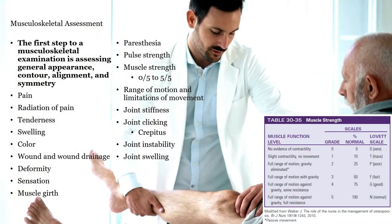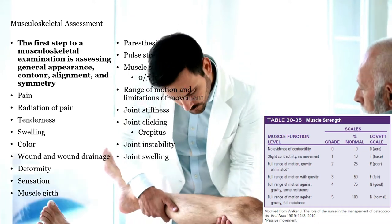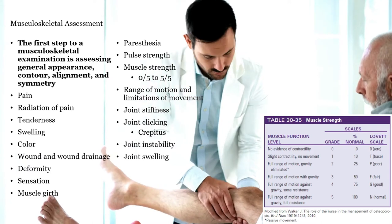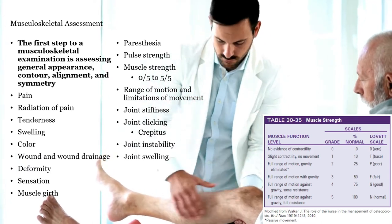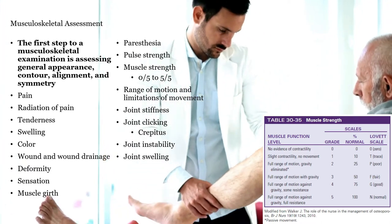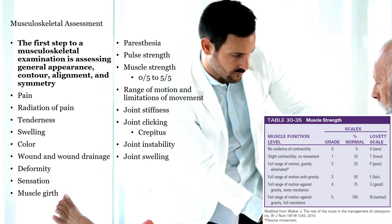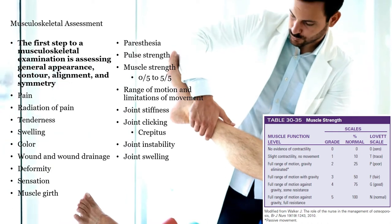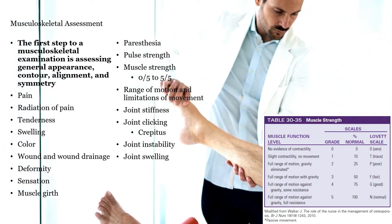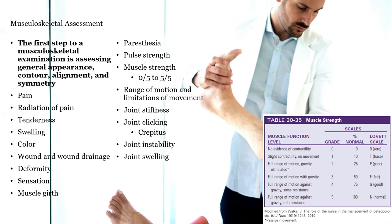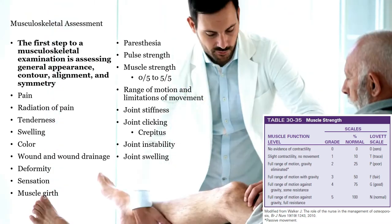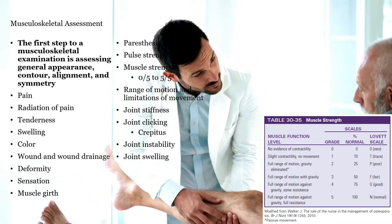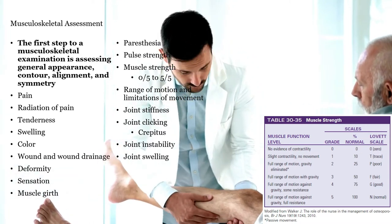A good musculoskeletal examination begins by assessing their general appearance, contour of the muscles, alignment of the limbs, and symmetry. If they are walking to you, look at their gait. Ask about pain — where is it, does it radiate, is there tenderness? Look at swelling and color. Is there an open wound or deformity? Are there changes in sensation or paresthesia? Check pulse strength, evaluate muscle strength using the Lovett scale, test range of motion, and look for stiffness, crepitus, clicking, instability, or swelling of the joints.